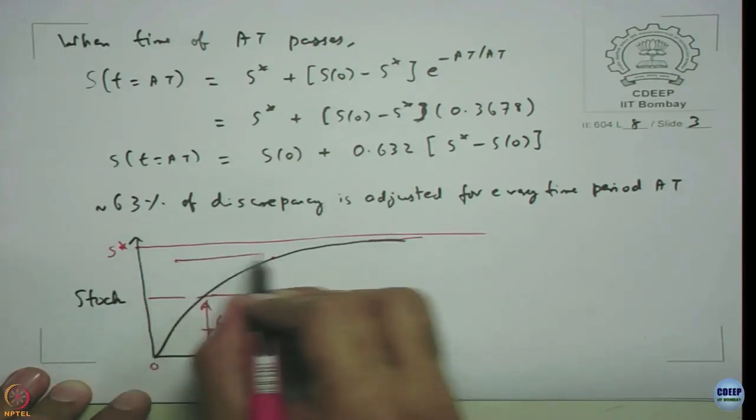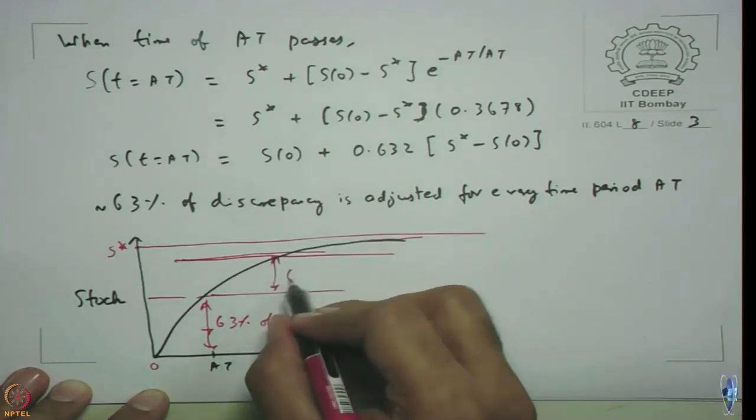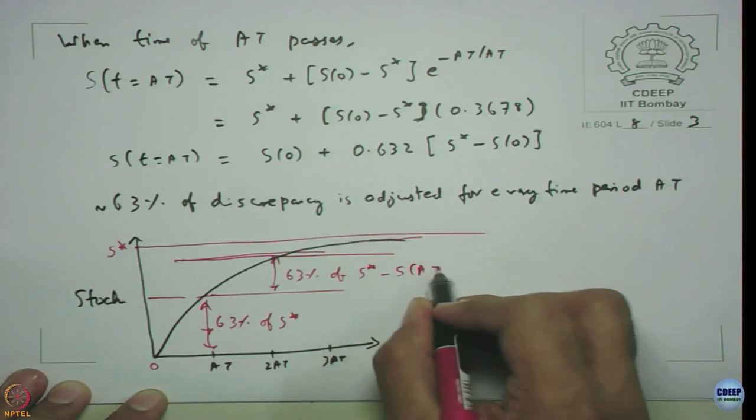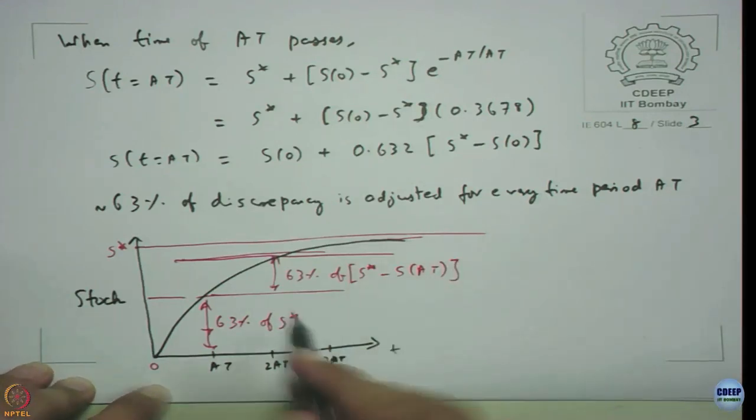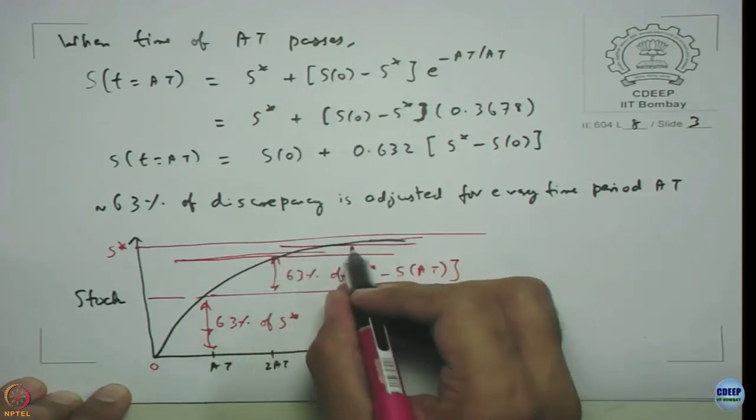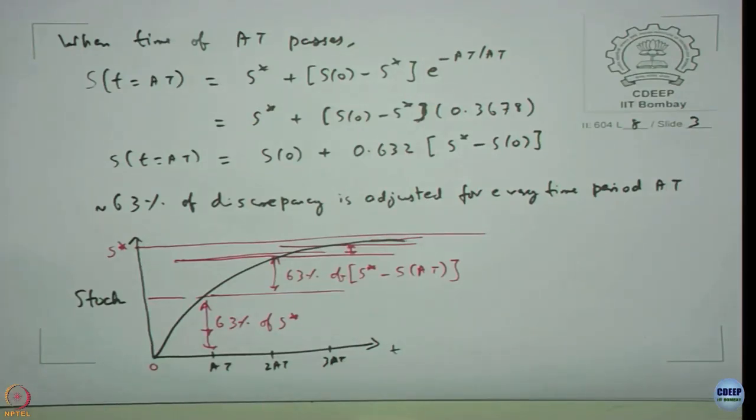At time 2AT, 63 percent of (s* - s(AT)) is satisfied. Every time unit, 63 percent of remaining discrepancy gets satisfied until it reaches the goal asymptotically. This graph did not come out very well, but it serves the purpose. The idea is 63% discrepancy adjusted for every time period AT.